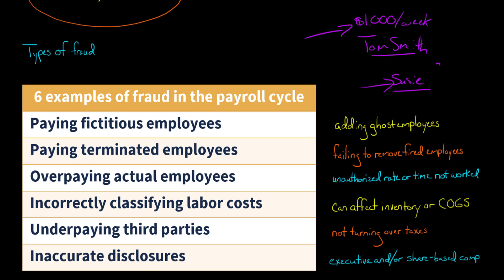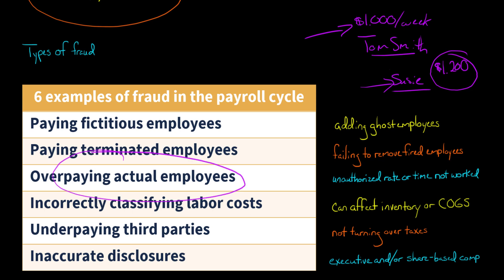Let's say Susie had been making $1,200 a week. That dishonest person in payroll would just leave Susie on the payroll and take the $1,200 going to Susie every week. Susie doesn't even know what's going on. Another thing you could have is issues with overpaying actual employees — not people who were fired and not removed from payroll, and not fictitious or ghost employees.